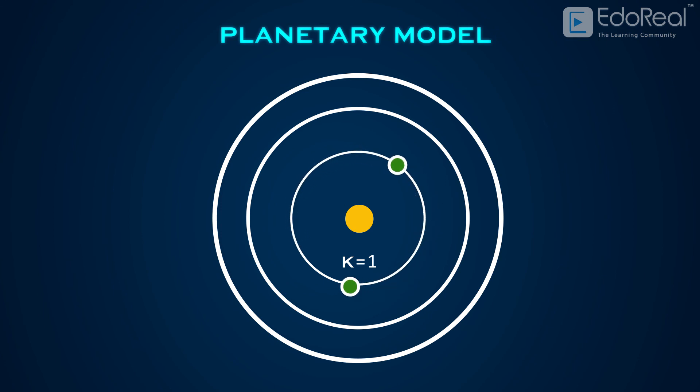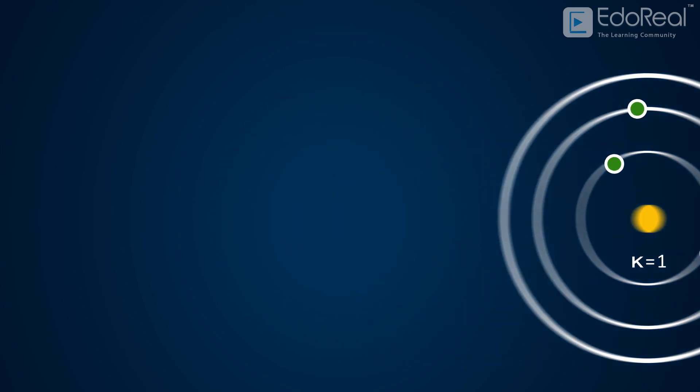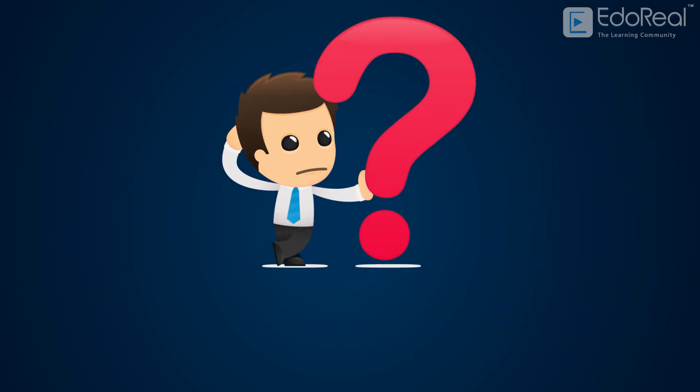And the third electron is shown on the second orbit, as it has a different energy level. Now, what happens with the fourth electron?